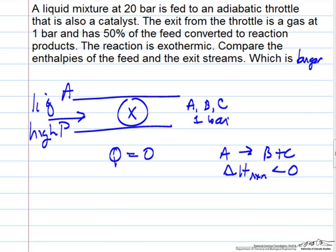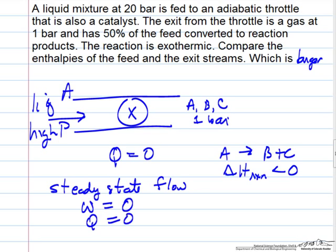If we do a first law balance for a steady state flow system, the energy balance shows that for a throttle, work is zero and Q is zero.